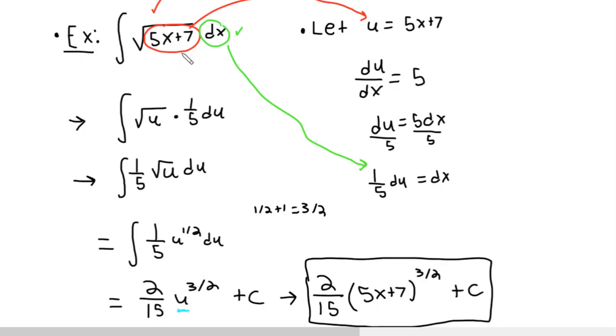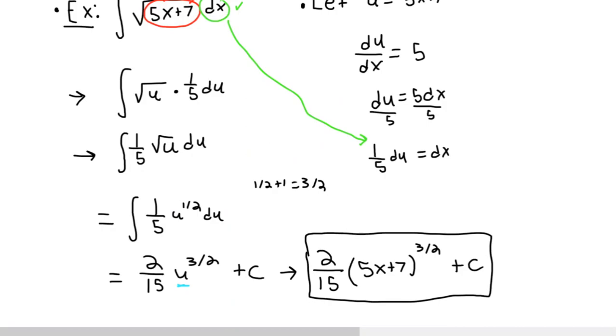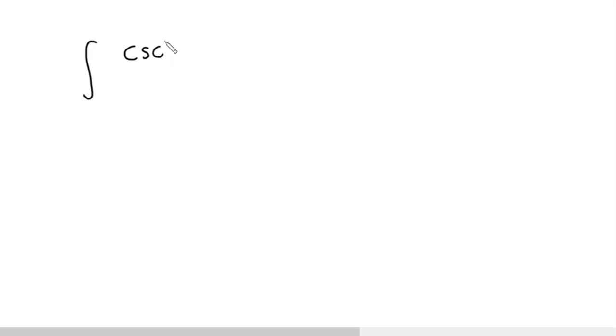So let's do another example, and hopefully it'll make a bit more sense. You just want to practice, practice, practice with u-substitution — it's definitely a great technique that's going to last you way into Calculus 2. So let's try another one: the integral of cosecant squared x over (1 plus cotangent x) with respect to x.